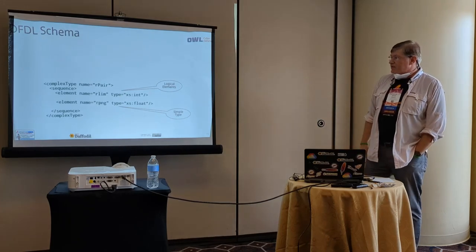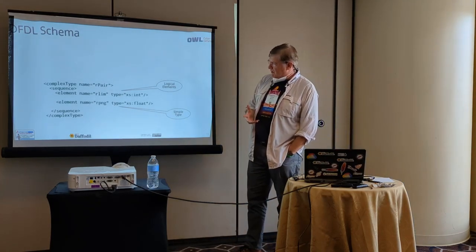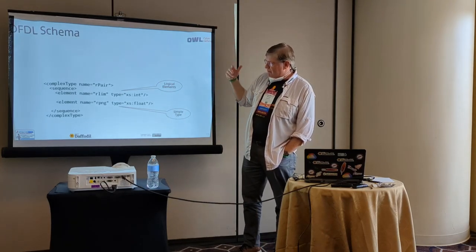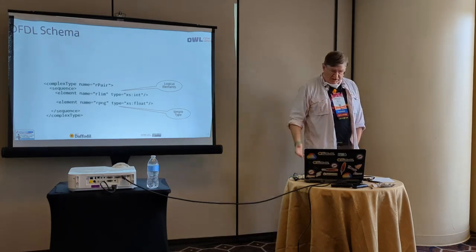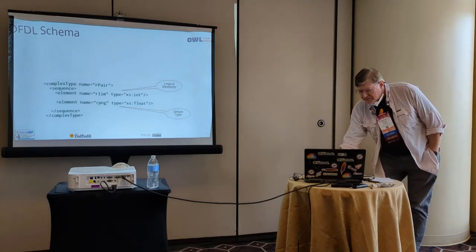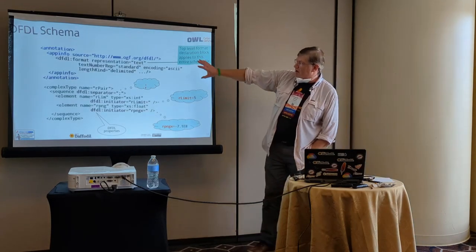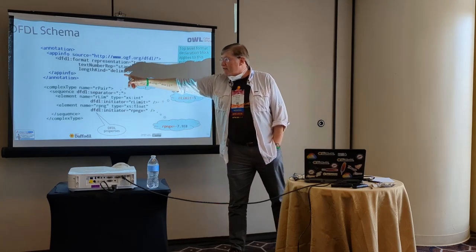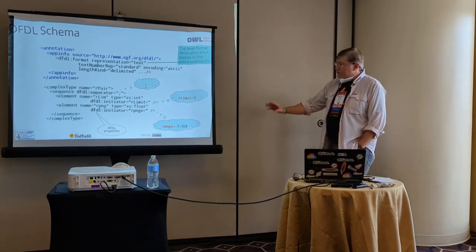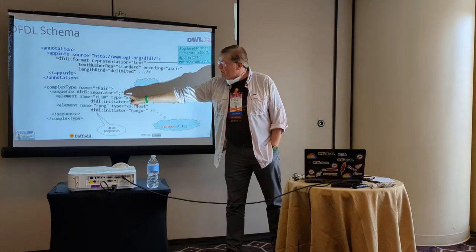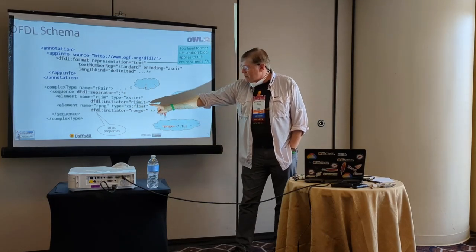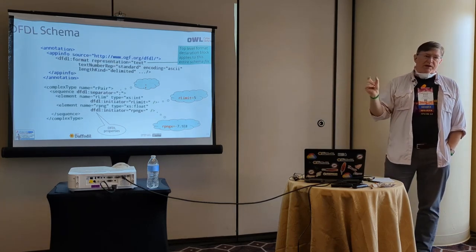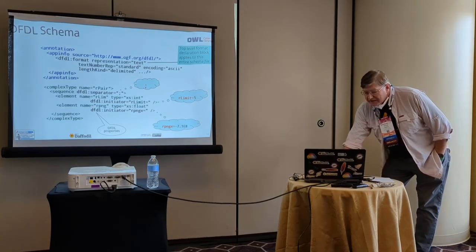A DFDL schema is actually an enhancement of an XML schema. Our little pair of two data elements — one was an integer, one was a float — are the logical elements. It's a complex type which I've named R_pair. That's the backbone of the thing. Then to make it into a DFDL schema, you add stuff: a block of properties at the top that declares properties applying to the full file — encoding is ASCII, length kind of the field is delimited, and so on. And then you also put properties directly on the schema itself: the separator of this sequence is a semicolon, the initiator for this field is 'R_limit equals', etc. Those are called DFDL properties, and there's a big collection of them. That's what the 200-page spec is about — the nuance of how all those properties work and interact.